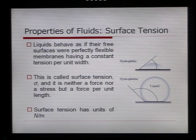Liquids essentially behave as if they have a free surface, as if their free surface was perfectly flexible membranes, having a constant tension per unit width. And surface tension is therefore given the symbol sigma, and has the units of newtons per metre. So it's a tension per metre.